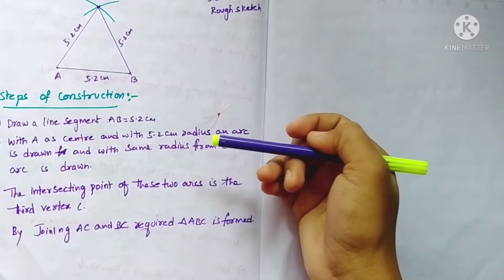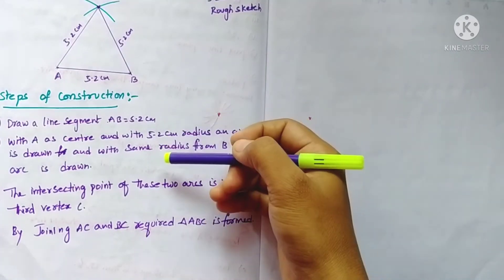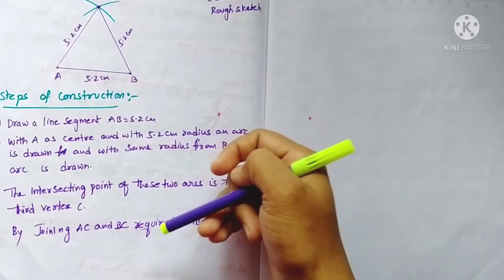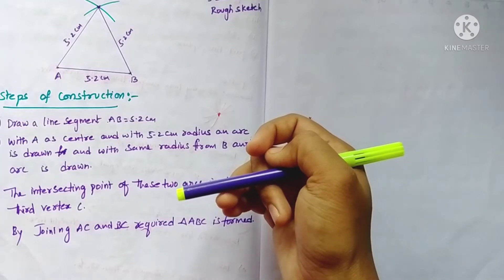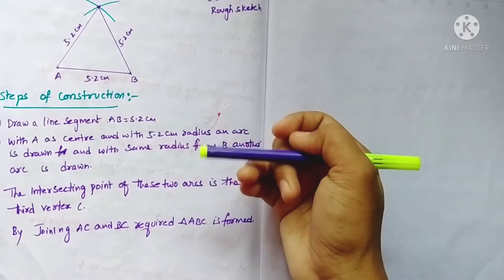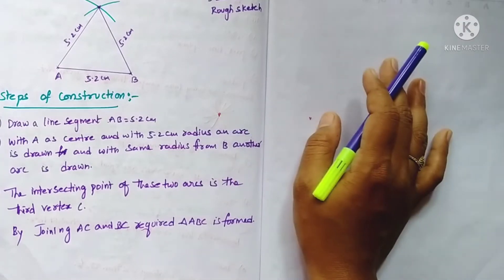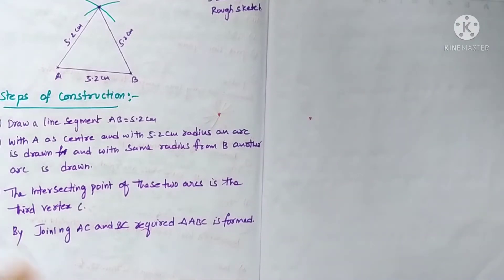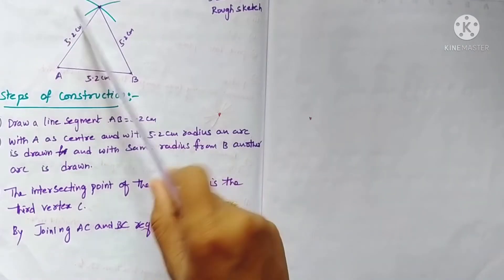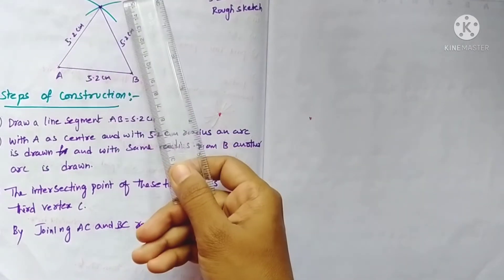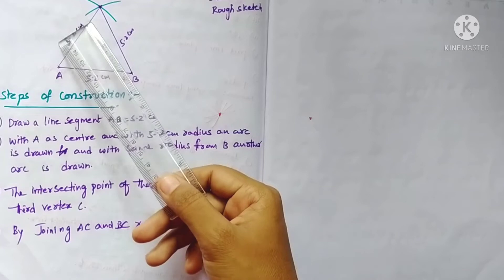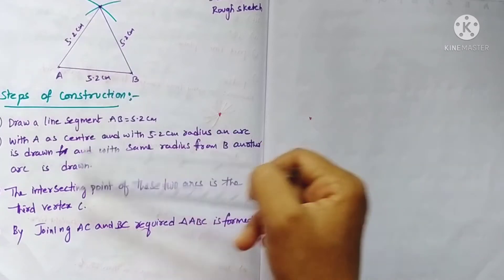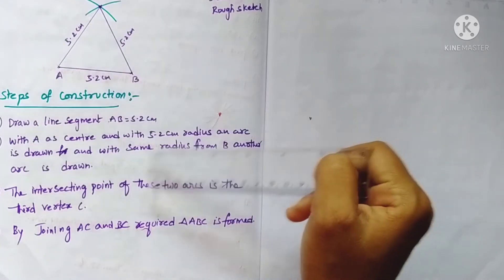This is the general construction of a triangle, but in this chapter, by using Euclid's third postulate, we can draw the triangle in another way. Instead of drawing arcs, we will draw circles.